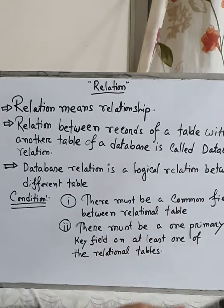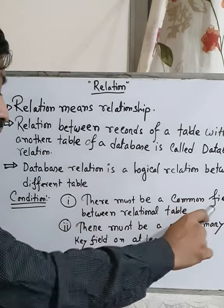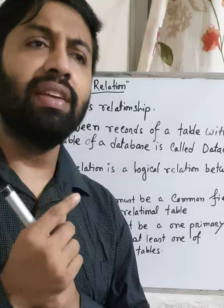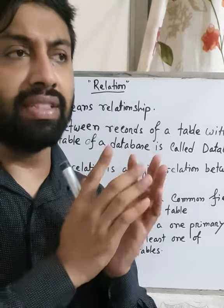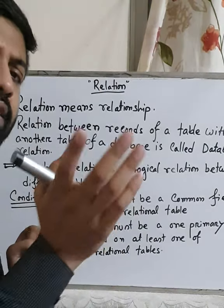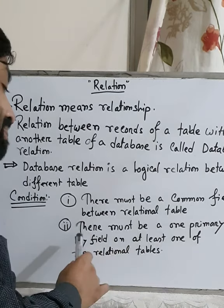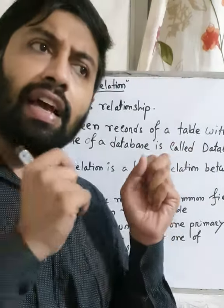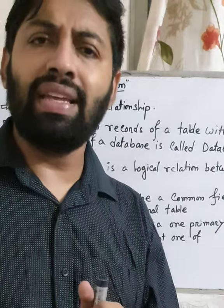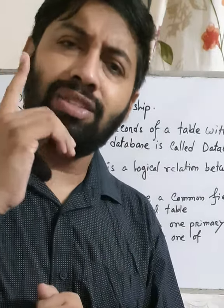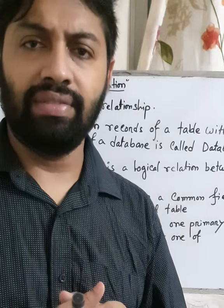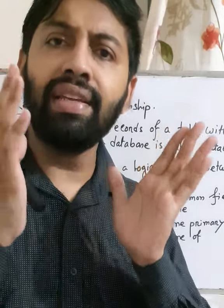When we make a relationship between two or more data tables, we must follow some conditions. First, there must be a common field between the related tables — at least one field must be common among two or more data tables. Second, there must be at least one primary key field among the relationship tables. A primary key is a unique field that cannot match any other data field in the database.